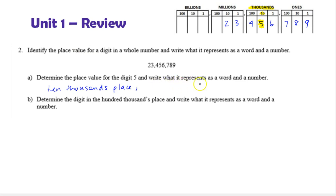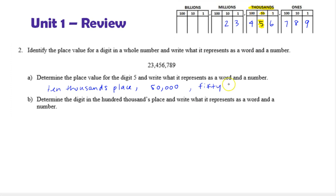Next we want to write what it represents as a word and a number. Starting with the number: you think of the digit itself followed by all zeros. So five in the ten thousands place is fifty thousand — 50,000. This one digit alone is representing the quantity fifty thousand. And as a word, we write that as 'fifty' followed by the grouping, which is 'thousand.'